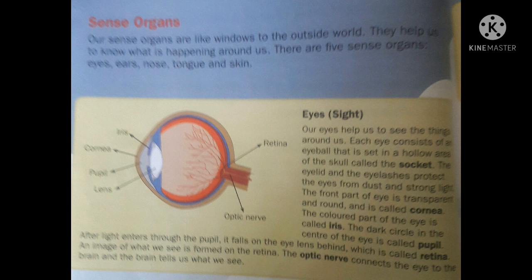Children, all of you, I think, know we have 5 sense organs. These are eyes, ear, nose, skin, and tongue. They help us to know the outside world. Our sense organs are like windows — windows to the outside world. They help us to know what is happening around us.